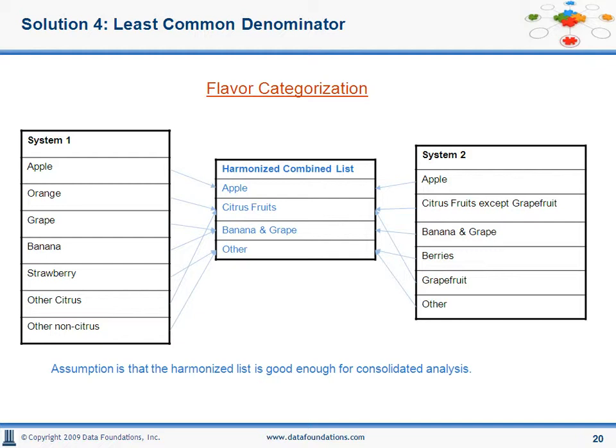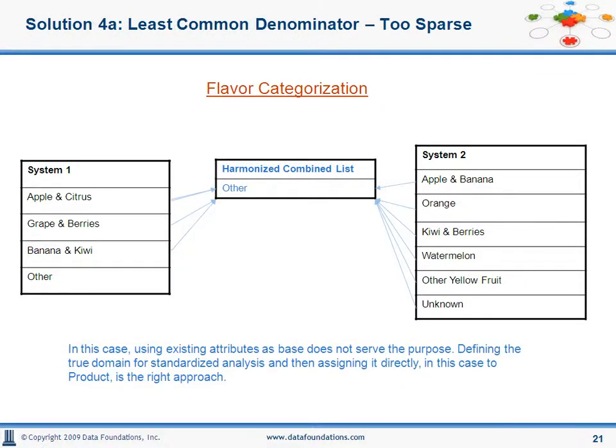Adding a level of mapping over and above what exists today. With a slight variation of the source, our least common denominator becomes less relevant, and the only option remaining is to start the process of definition and enrichment of the core master data entity — the product entity, in this example, with flavor.